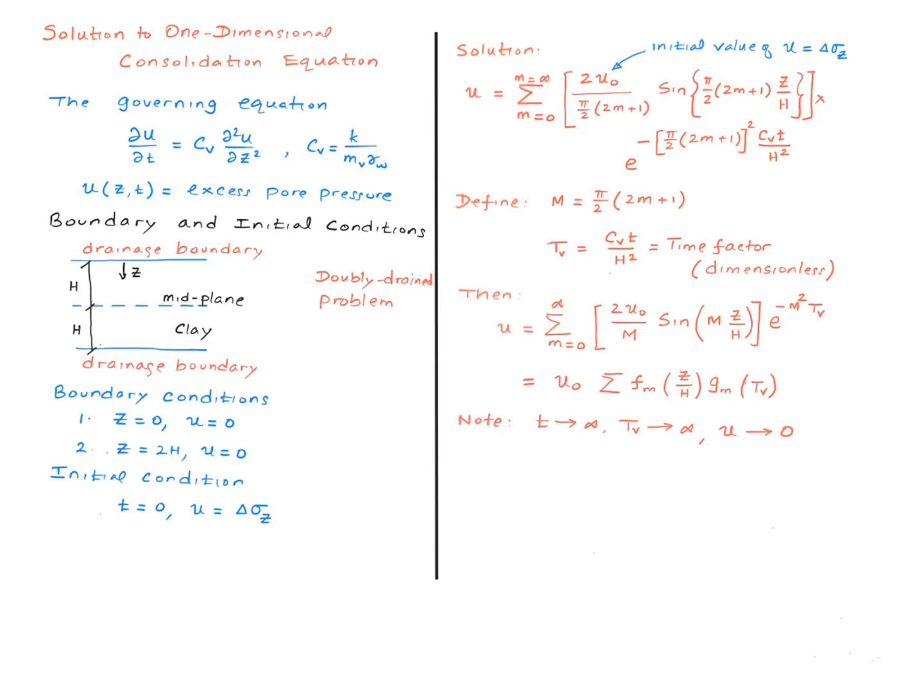Also, we may want to note that as little t goes to infinity, big T, which is simply proportional to little t, also goes to infinity. So when t sub v goes to infinity, this exponential term goes to zero. And therefore, little u goes to zero, as it should be. In other words, excess pore water pressure dissipates completely when the time is very large.